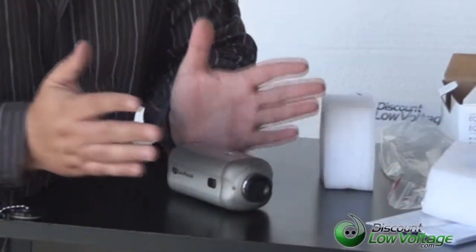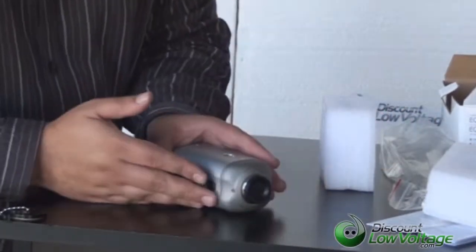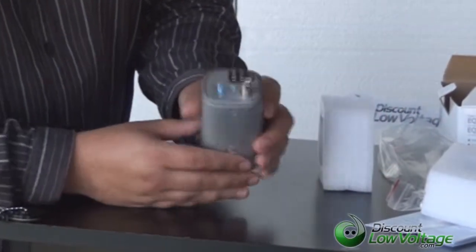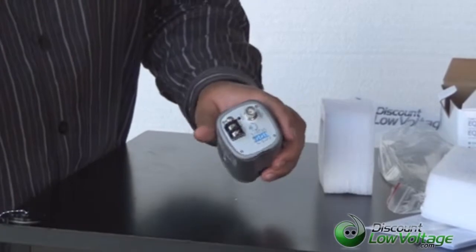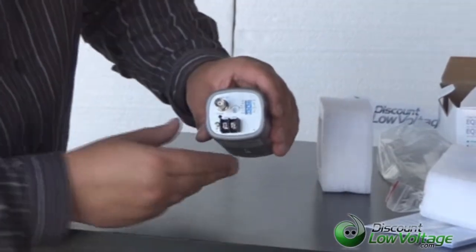If you have something that's really far away that you need to zoom in on, you might want to look into getting maybe a 5 to 50 millimeter varifocal lens.